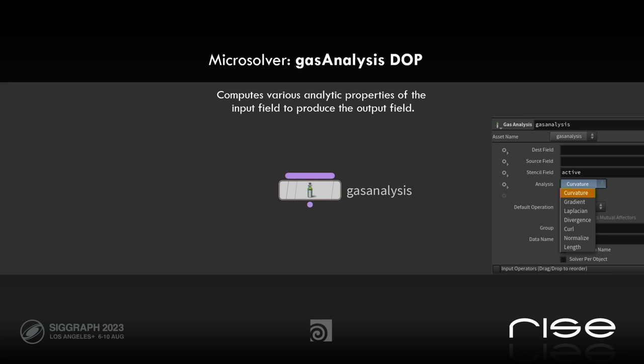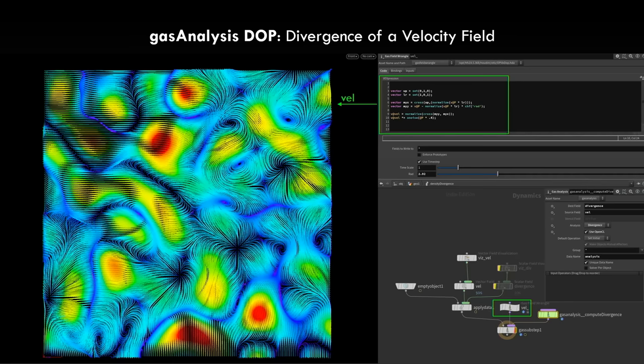This brings me to the next microsolver: gas analysis stop, also the next in the alphabet. This computes various analytic properties of the input field to produce the output field. There are seven different types of analysis you can do on your field: curvature, gradient, Laplacian, divergence, curl, normal, or normalize the field, or measure the length. Here, with a few lines of VEX, I'm writing a velocity field which is a divergent noise field, and then using the gas analysis stop to compute the divergence of this velocity, which we all deal with in any fluid simulation.